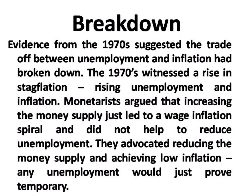We will now discuss the breakdown of this relationship. Evidence from the 1970s suggests the trade-off between unemployment and inflation broke down, as stagflation — high unemployment and high inflation simultaneously — was witnessed. An increase in money supply led to a wage-inflation spiral, which did not help reduce unemployment. Reducing money supply would achieve low inflation, and any resulting unemployment would prove temporary.